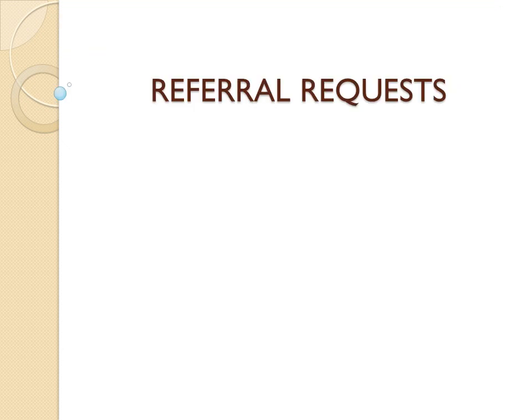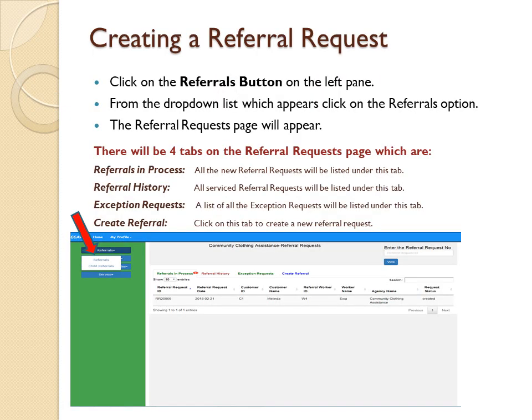Referral Requests - Creating a Referral Request: click on the Referrals button on the left pane, then from the drop-down list click on the Referrals option. The Referral Requests page will appear with four tabs: Referrals in Process, where all new referral requests will be listed; Referral History, where all serviced referral requests will be listed; Exception Requests, where a list of all exception requests will be listed; and Create Referral.